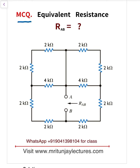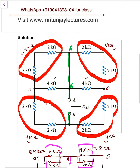Our MCQ asks for the equivalent resistance between point A and point B. To determine this, first observe carefully: these two points are at the same potential. Why? Because there is no resistance between these two terminals, and no other element is connected between them — that is why they are at the same potential.